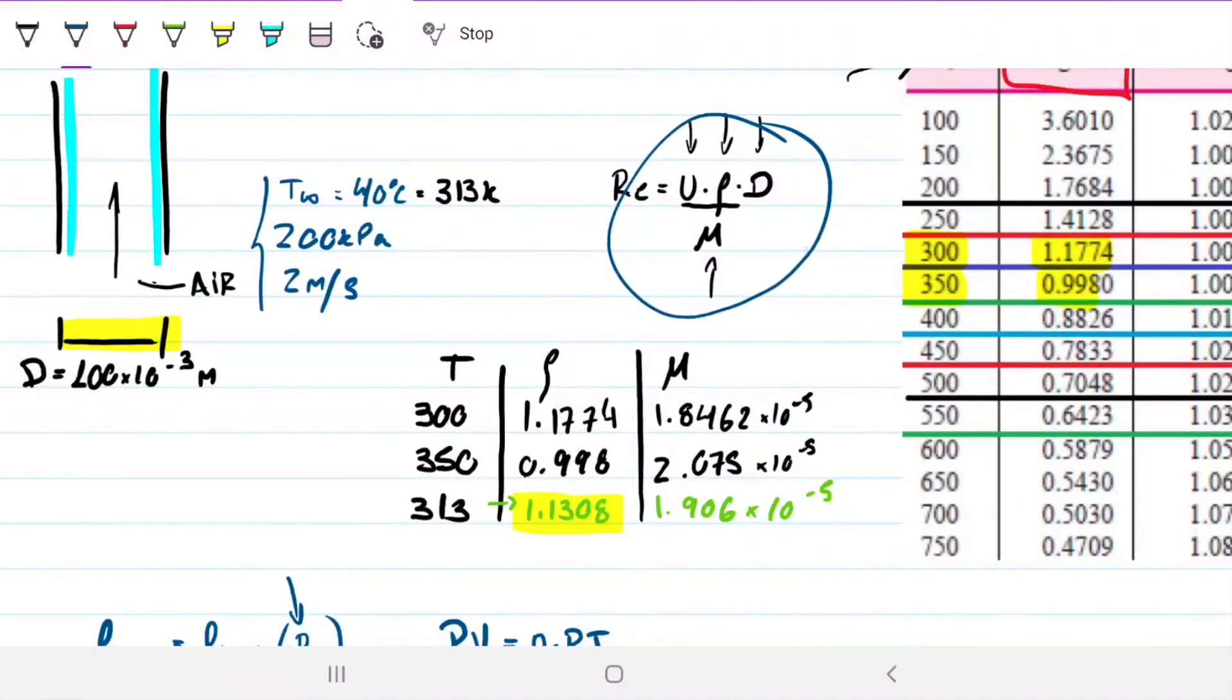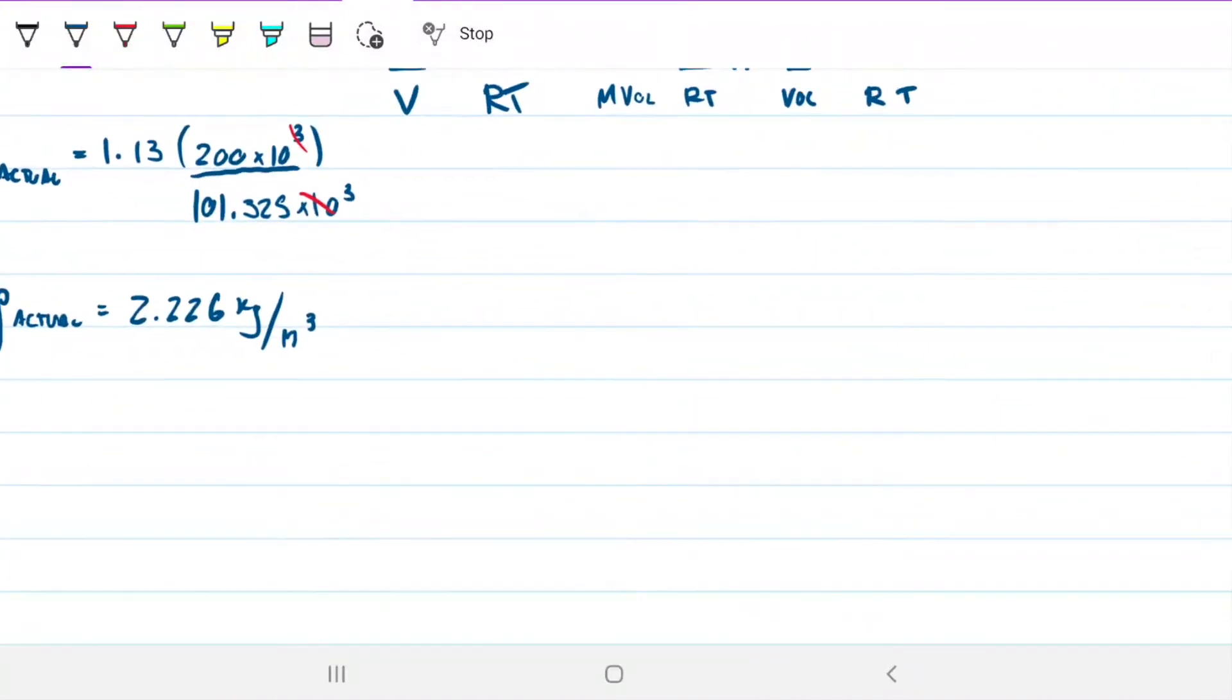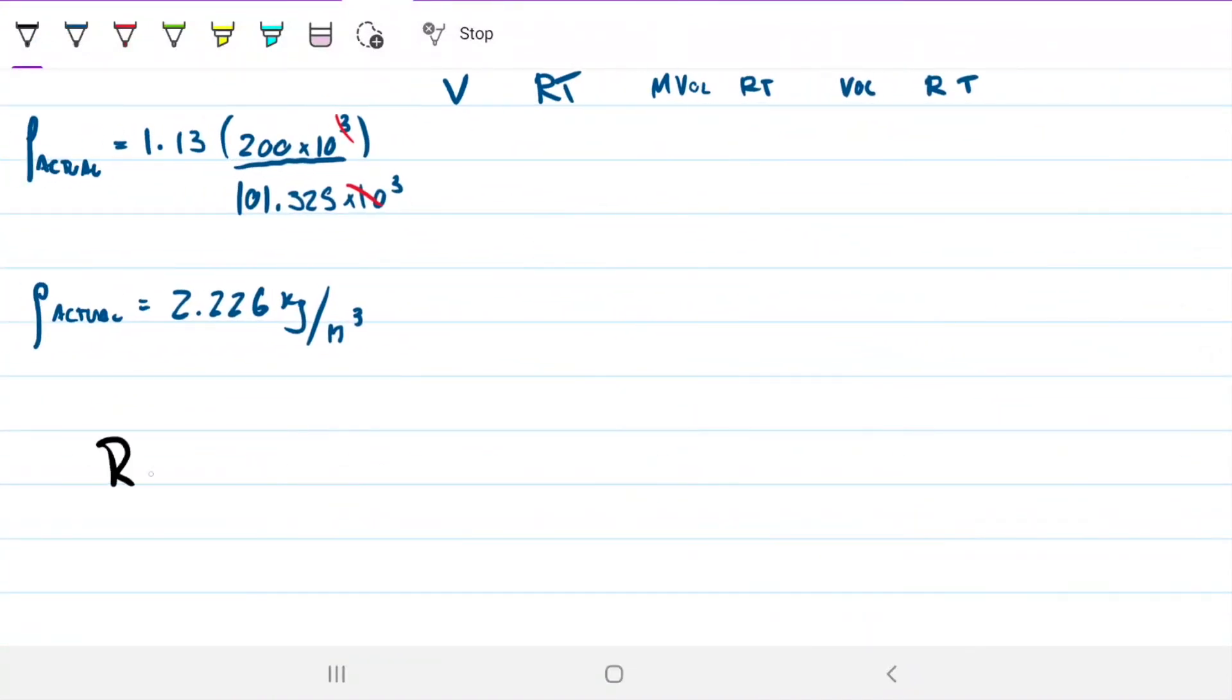But now that we have that, we can calculate Reynolds. Because if you recall, that's what we were missing for Reynolds. The other thing we were missing was this fellow that I already got. So we can go ahead and do Reynolds. My Reynolds will be 2 meters per second times my density, 2.226, times characteristic length diameter, 0.1 meters. And my viscosity is 1.906 times 10 to the minus 5. Which gives me a Reynolds of 23,365.9.